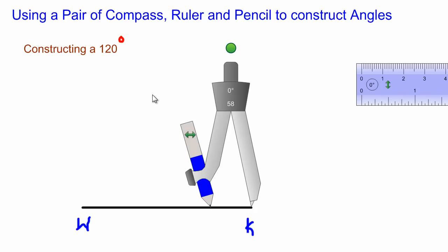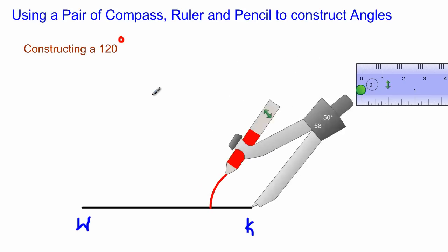I'm going to use red for my construction lines because my construction lines should always be faded. After you have positioned the point of your compass at the point K, I am going to swing an arc from my line segment WK here, so my pencil should be on that line segment as I am illustrating here, and I'm going to swing the arc in that direction.